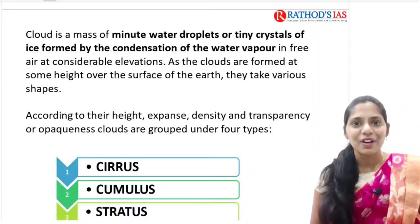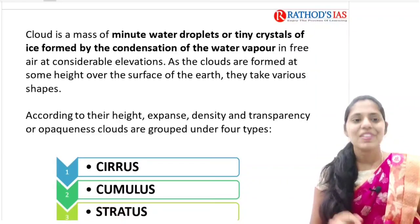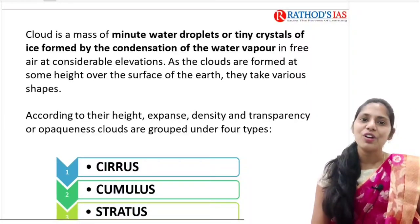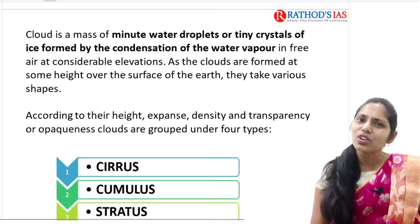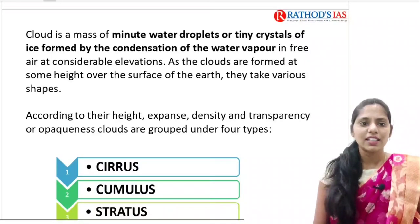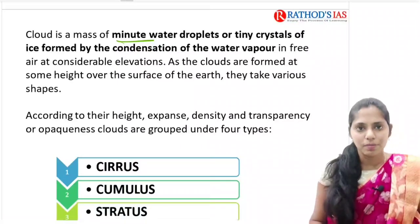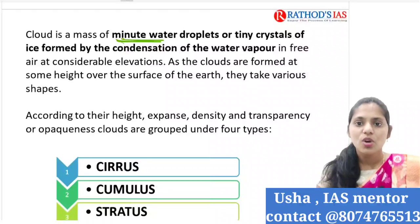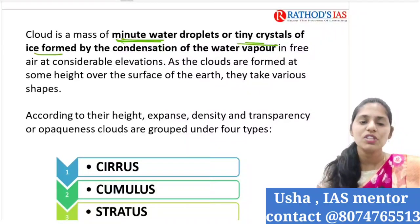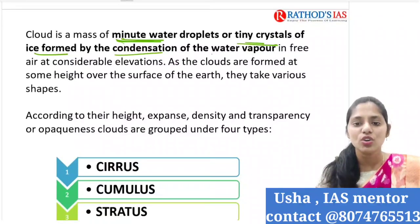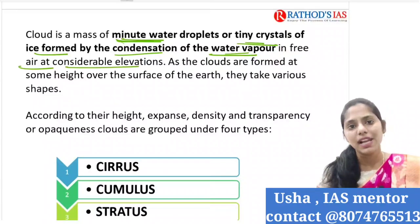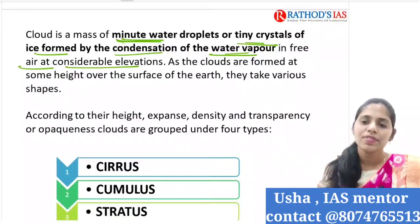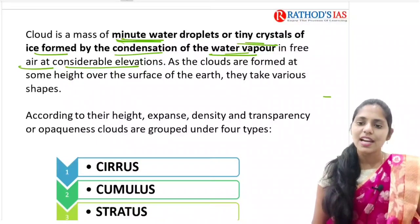I could see different types of clouds - sometimes feather-type clouds, sometimes like cotton balls - but at that time I didn't know why they were different shapes. Now I am teaching about clouds. A cloud is nothing but a mass of minute white water droplets or tiny crystals of ice, which are mainly formed by condensation of water vapor in free air at considerable elevation.